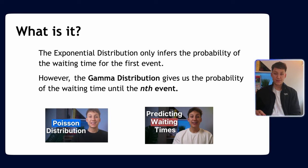Now the gamma distribution is basically an extension of the exponential distribution, and what it's saying is that the exponential distribution only infers the probability until the first event happens, but the gamma distribution infers the probability until the nth event happens. So you can see it's kind of like a generalization, extending what we're trying to calculate here into n times instead of just one time.